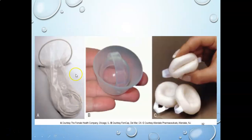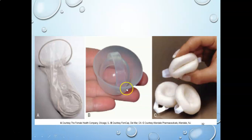Here are some pictures: this is a female condom — the ring goes up against the cervix and the other ring hangs outside the body. It's effective as a barrier method and can also help with STI prevention, just like the male condom. This is a cervical cap — a diaphragm looks relatively similar, like a cup that sits against the cervix. And this is the sponge.